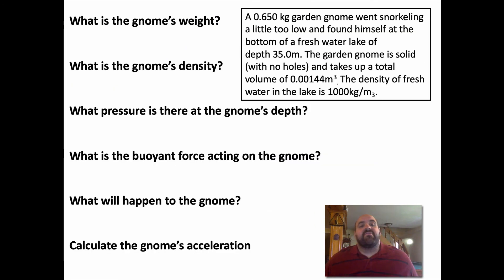Let's use these formulas. Let's just do some physics math. Looks pretty dense here, but it's not too bad. You have a 0.650 kilogram garden gnome. It goes snorkeling a little too low and finds itself at the bottom of a freshwater lake of depth 35 meters. So you have a garden gnome at the bottom of a 35 meter lake. The garden gnome is solid with no holes and takes up a total volume of 0.00144 m³. That's actually like a 10 by 10 by 10 centimeter thing. The density of freshwater in the lake is 1000 kg/m³. So they asked us to calculate some things. Let's go through these one at a time.